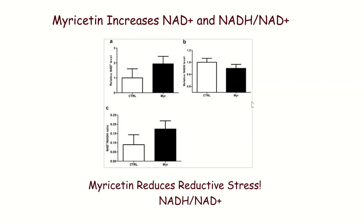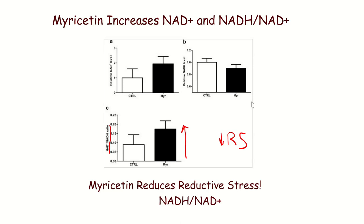In these mice, they gave them myricetin and you can see NAD+ levels go up. This is not even a high fat diet. Myricetin increases NAD+ levels and actually even lowers NADH a little bit — getting these mice out of reductive stress. NAD+ is nearly doubling, NADH is down a bit, and the ratio of NAD+ to NADH is significantly higher. These mice are very much out of reductive stress when given myricetin.